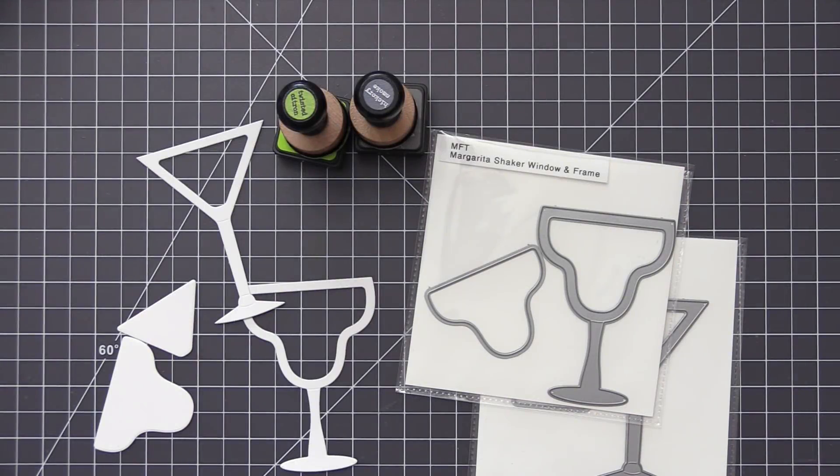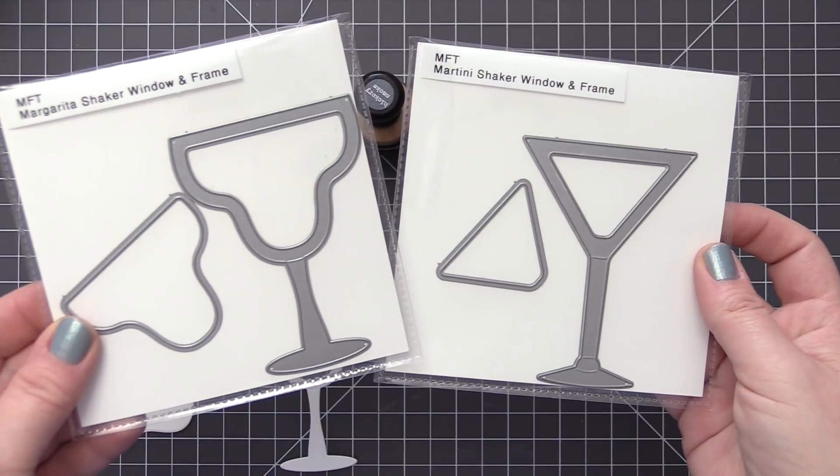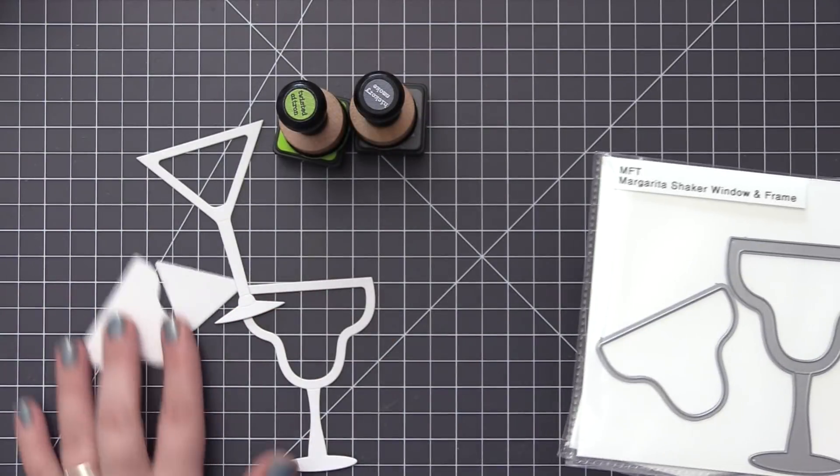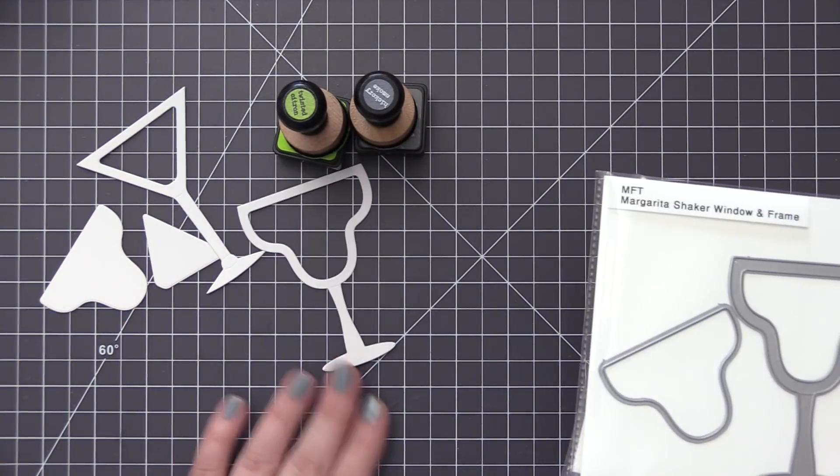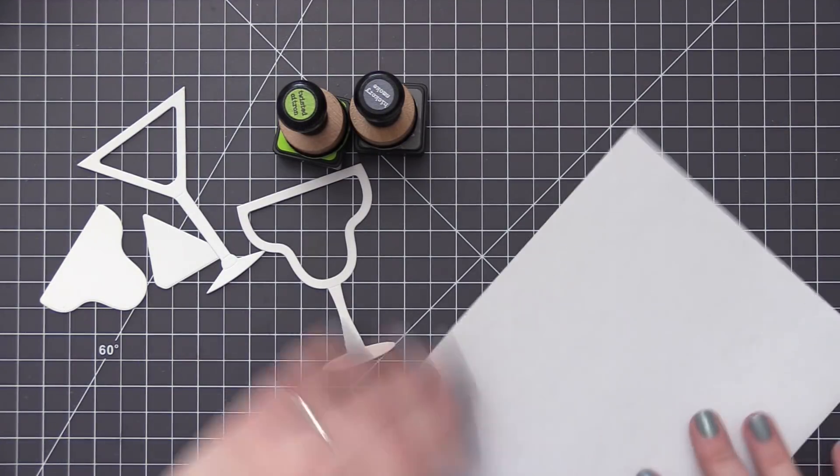We're going to be using the fun new margarita shaker window and frame die, along with the martini shaker window and frame die. So these dies are a lot of fun, not only because they are the shape of a fun cocktail glass, but they also can be turned into shakers and that's the intent of this design.